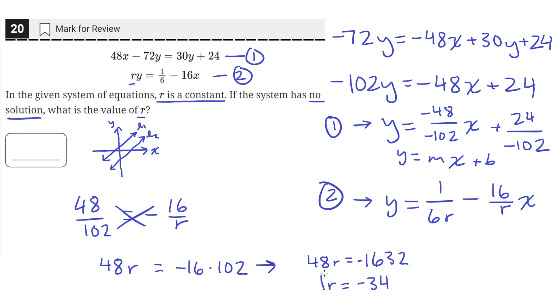So for an r value of negative 34, these two equations have no solution because they will be distinct and parallel lines. Negative 34. We know they're distinct because 1 over 6 times negative 34 is not equal to 24 over negative 102, so they have different y-intercepts. But the slopes, when we plug in a value of negative 34 as r, the slopes will be the same, so they'll be parallel lines. So r equals negative 34.